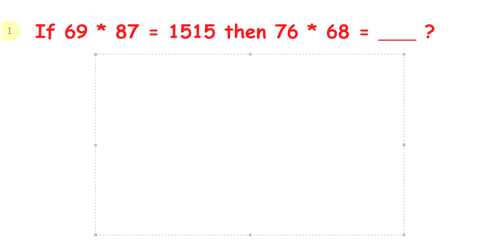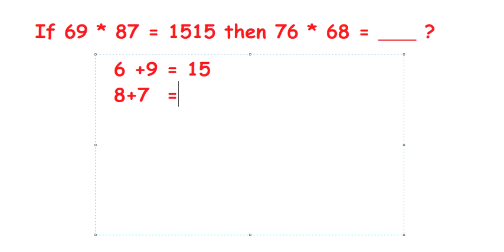Here we have from the question: 6 plus 9 equals 15, and 8 plus 7 equals 15. We get the result 1515 by concatenating these two 15s to get 1515.